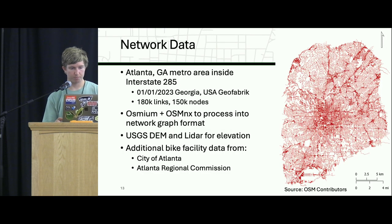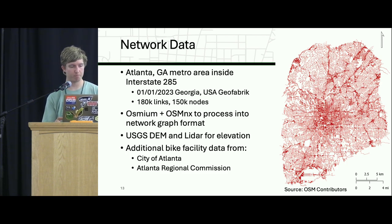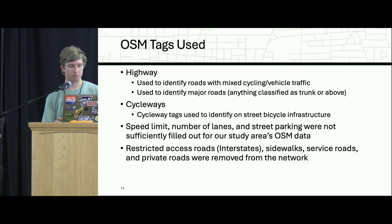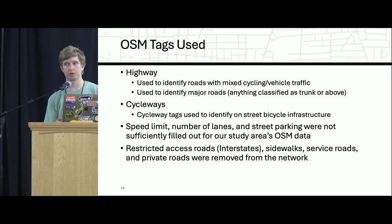For a quick demonstration, I used the Atlanta area, where we have GPS traces. We used a Geofabric OSM extract with about 180,000 links and 150,000 nodes. We used Osmium and OSM to process that into a network graph format for routing, brought in USGS data for elevation, and added additional bike facility information from the city of Atlanta and the Atlanta Regional Commission. The OSM tags we used were really just two: highway and cycleway. Highway was used to identify roads with mixed cycling and vehicle traffic and to identify major roads — trunk and above classified as major. Cycleways were used to identify on-street bicycle infrastructure.